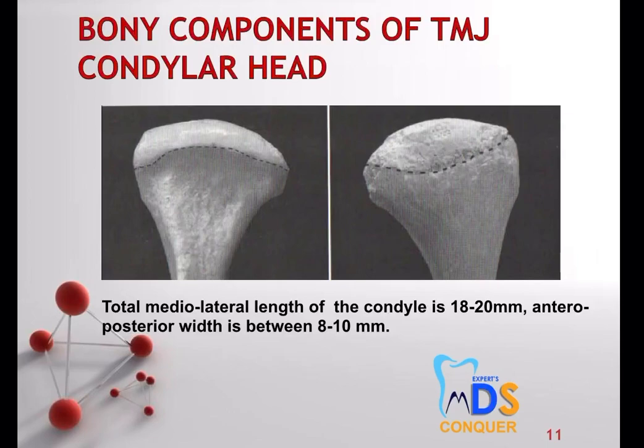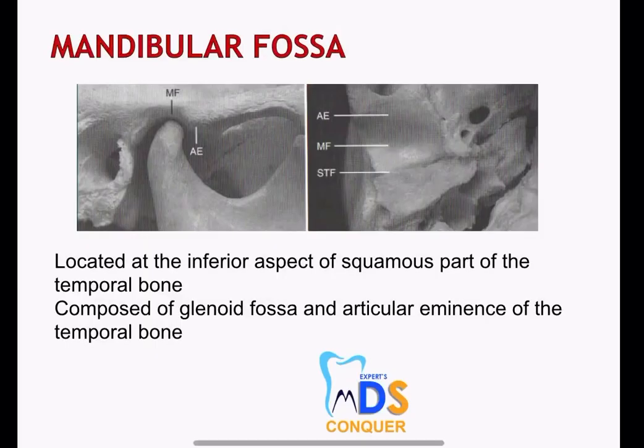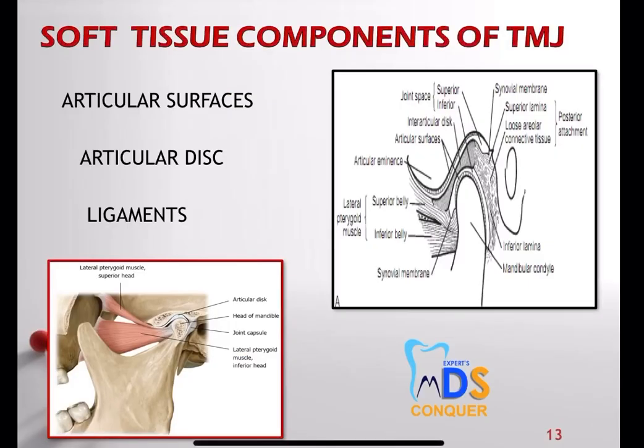Now coming to the main anatomy of the joint — how it looks. It has hard components and soft tissue components. The first is the condylar head — you can write the dimensions as shown in the picture, draw it, and give the dimensions. Next you have to write the fossa: it is located in the inferior part of the squamous part of the temporal bone, which is composed of the articular eminence at the anterior limit and the glenoid fossa. Next, soft tissue components include the articular surfaces, the articular disc, and the ligaments.